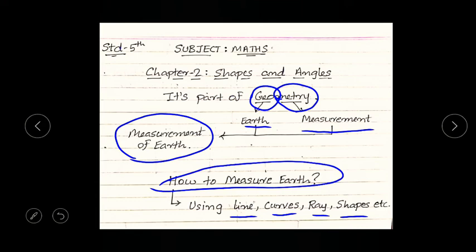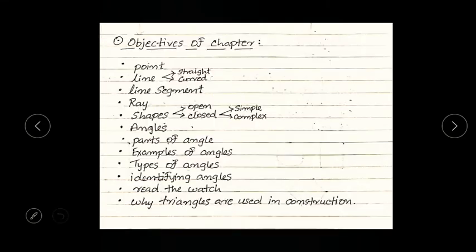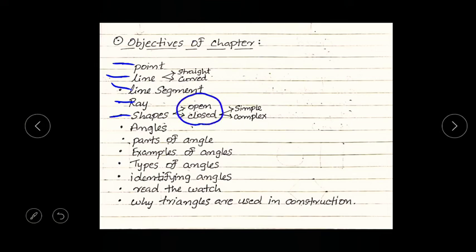Let's start with the objectives of this chapter — the topics we are going to learn. The first topic is point, which is the basic part of any shape. Then we will see what is a line, including straight line and curved line. After that we will learn about line segment, then ray, then shape, and we will study open and closed shape figures, further classified into simple closed and complex closed shapes.